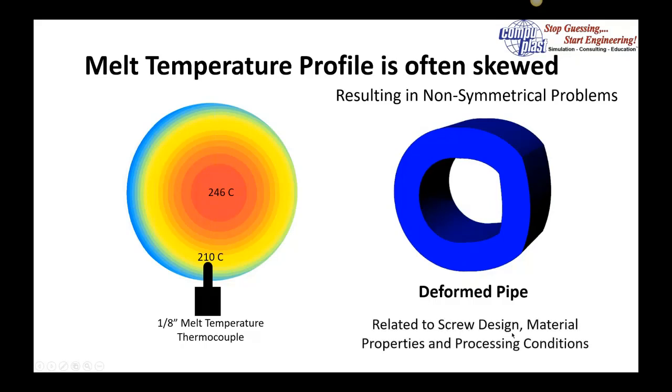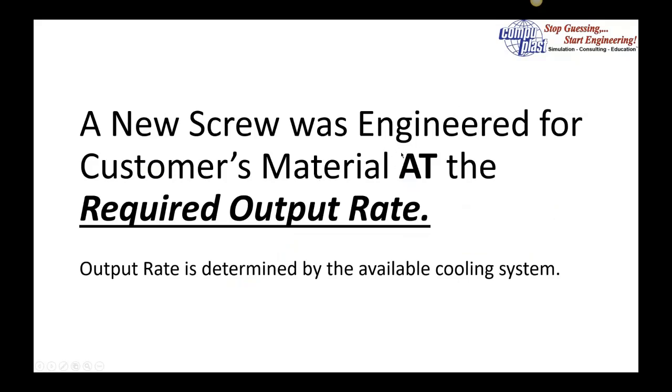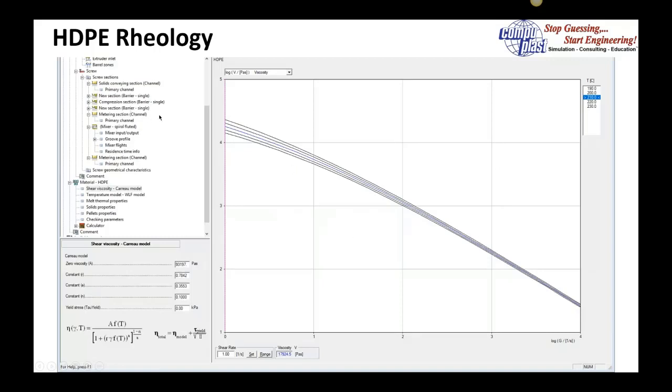All this is related to the screw design, the material properties being processed, and the process conditions. Since extruders often outlive their initial purpose, they're often reused in applications with materials the screws weren't intended to process and running under conditions and RPMs that weren't part of the original design. Once we understand this, we can engineer a new screw for the customer's material, designed at the required output rate. This is determined by the cooling system, so you do a cooling analysis to see what the maximum production rate allows. Based on knowing this output rate and the material rheology—here we show the shear viscosity versus shear rate for this high density polyethylene—we design a new screw.